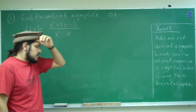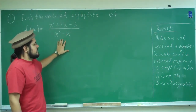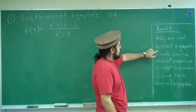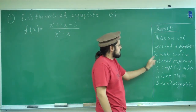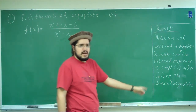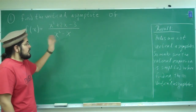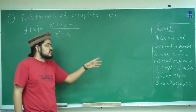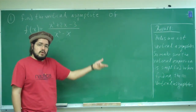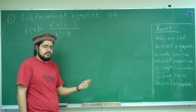Usually what we want to do to find the vertical asymptotes is equate the denominator to zero. However, recall one thing: holes are not vertical asymptotes, so we must make sure that the rational expression is simplified before finding the vertical asymptotes. We simplify first, then find where the holes are, discard those, and find the real vertical asymptotes.